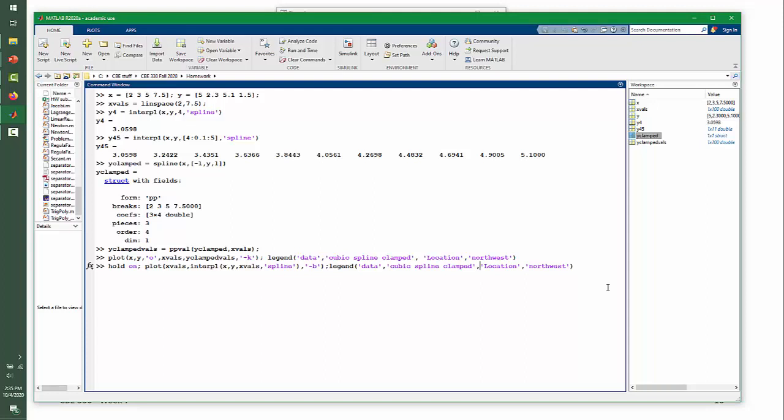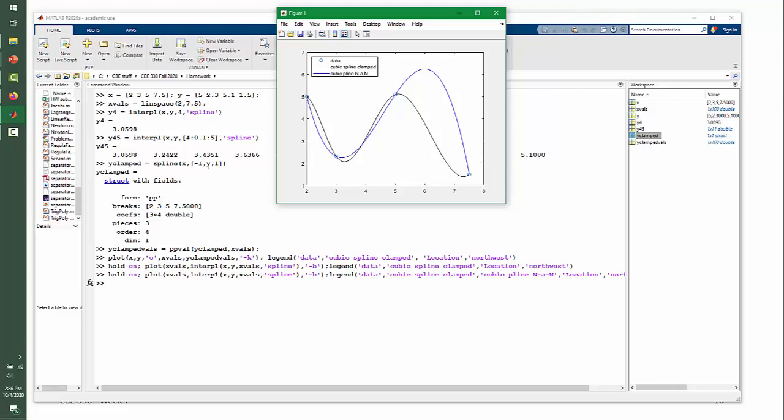We can compare this cubic spline to the cubic spline calculated using the not-a-knot boundary conditions, calculated using the interp1 command. Here we see that the not-a-knot boundary condition and the clamped boundary condition result in very different cubic splines.